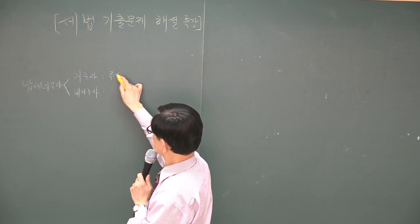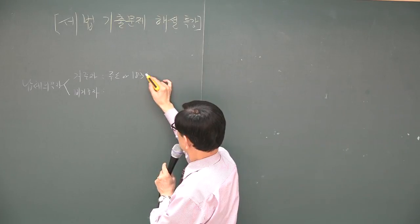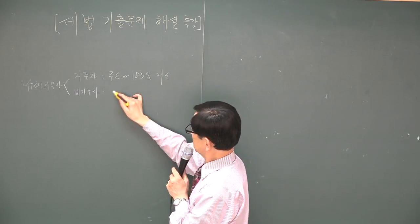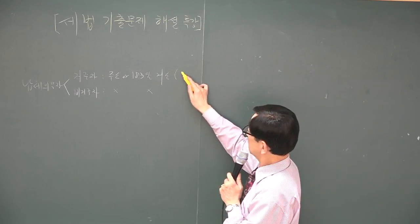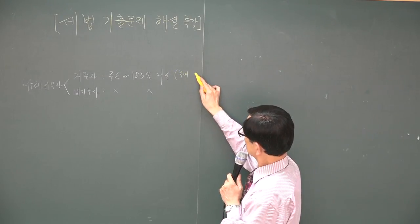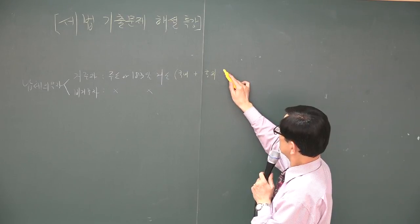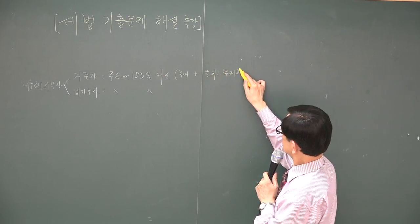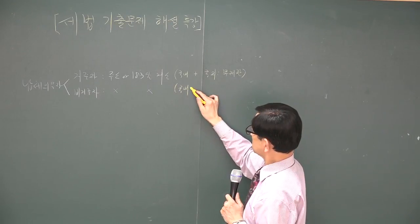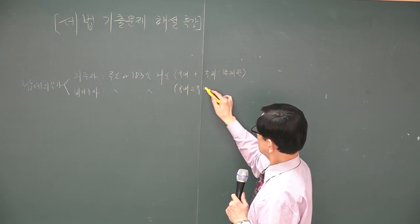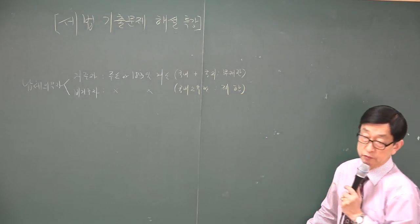거주자는 국내에 주소가 있거나 또는 183일 이상 거소가 있는 자, 머물고 있는 자입니다. 이 사람에 대해서는 국내 소득도 과세하고 국외 소득도 모두 과세합니다. 그래서 이거는 제한이 없다 - 무제한 납세의무자입니다. 비거주자는 국내 소득만 과세하기 때문에 제한 납세의무자라 표현합니다.